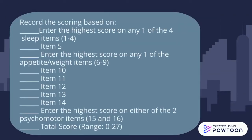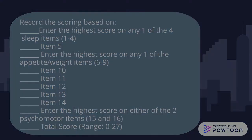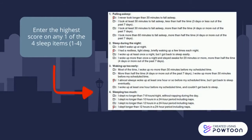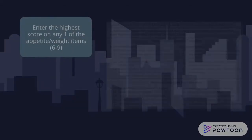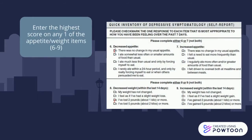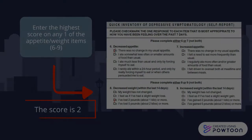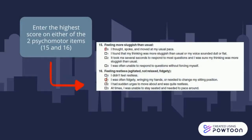For the scoring procedure, record the scoring based on: 1) entering the highest score on any one of the 4 sleep items, questions 1 to 4; 2) entering the highest score on any one of the appetite or weight items, questions 6 to 9; items 10 through 14 are scored directly; and entering the highest score on either of the 2 psychomotor items, 15 and 16. Sum all together — the total score ranges from 0 to 27. From this example, the score is 3 for the highest sleep item score, 2 for the highest appetite or weight item score, and 1 for the highest psychomotor item score.